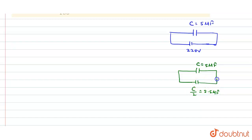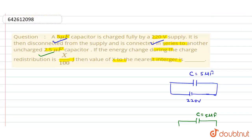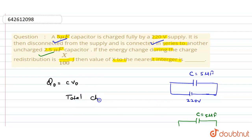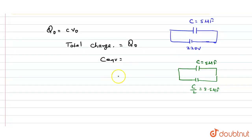We have to find the value of x to the nearest integer. The initial charge q₀ is given by q₀ = C·V₀. After the battery is disconnected and the capacitor C/2 is connected in series with C, the total charge remains Q₀. The equivalent capacitance in series is C_eq = 2C·(C/2) / (2C + C/2) ... which simplifies, and we can write it as 3C/2... wait — for series: C_eq = (C × C/2)/(C + C/2) = C/3... but here we use the charge redistribution approach.